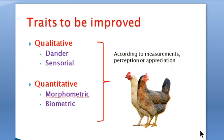Now let's review some of the traits to be improved in animal breeding and genetics. They can be categorized based on the criteria considered. According to measurements, perception, or appreciation, there are two categories: qualitative traits, which are sensorial ones, and quantitative traits, which are measurable and can be analyzed statistically.